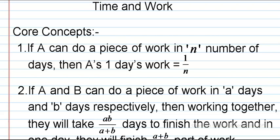Now we are going to see the core concept of time and work. The first point is: if A can do a piece of work in n number of days, then A's one day work is 1 by n. For example, if A can do a piece of work in 10 days, then A's one day work is 1 by 10.